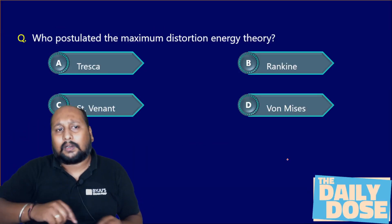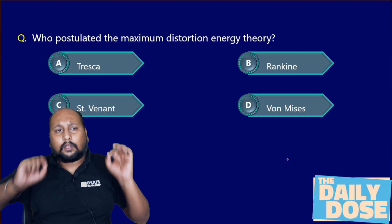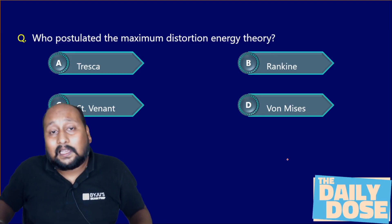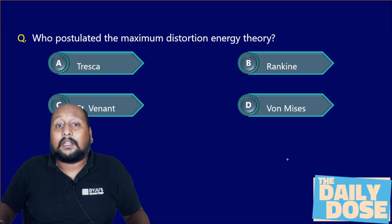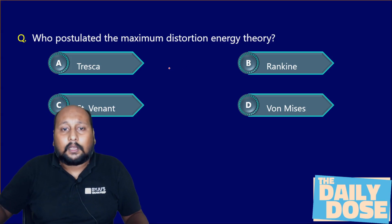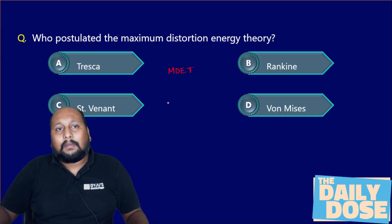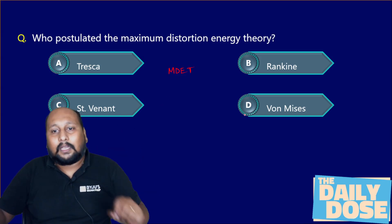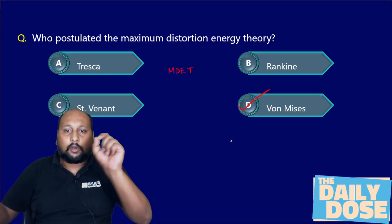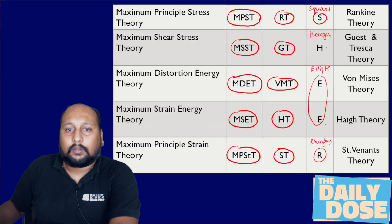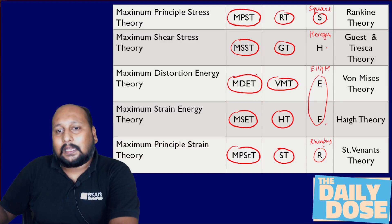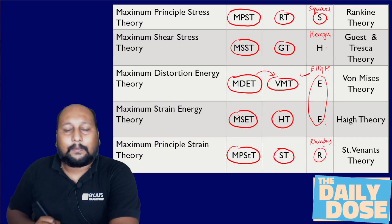Let us take one or two questions for more clarity. This is a previous year ESE problem: who postulated the maximum distortion energy theory? Remember, MDET — that is VMT, Von Mises theory. Let me show you the table one more time: MDET is VMT, and the shape is ellipse.